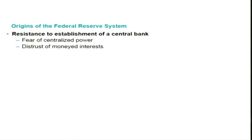Coming to the Federal Reserve System, the origin of the Federal Reserve System in the US saw initial resistance among different stakeholders in the economy, especially from bankers and financial institutions. Setting up a central bank meant centralized power, and there was resistance to its establishment in the US mainly because of a fear of centralized power. In addition, there was distrust of such a moneyed interest — one monetary authority controlling all the banking and financial systems.